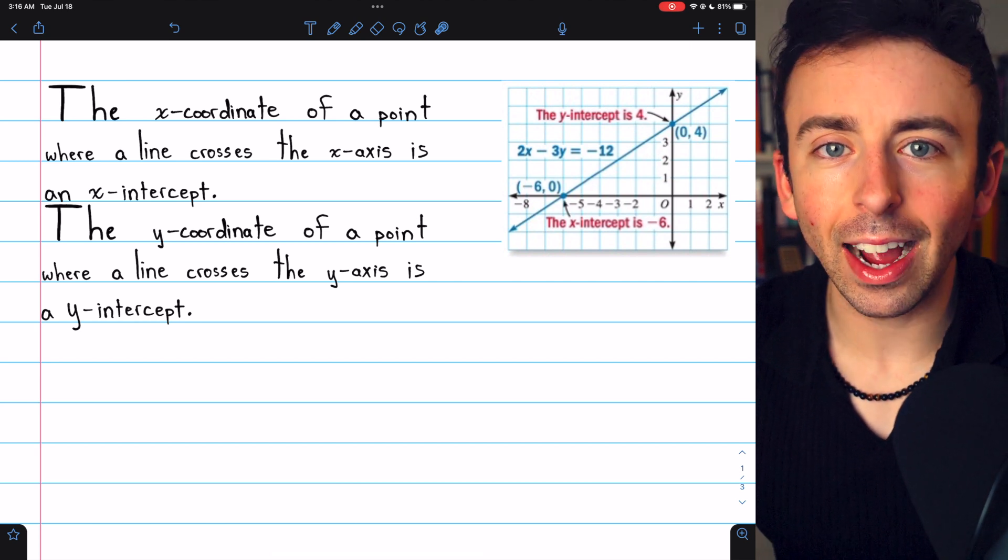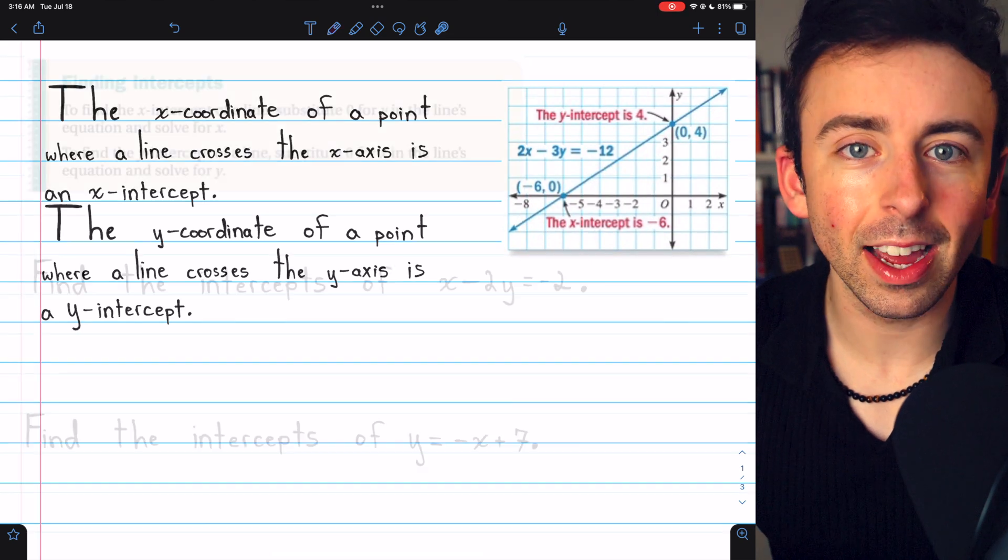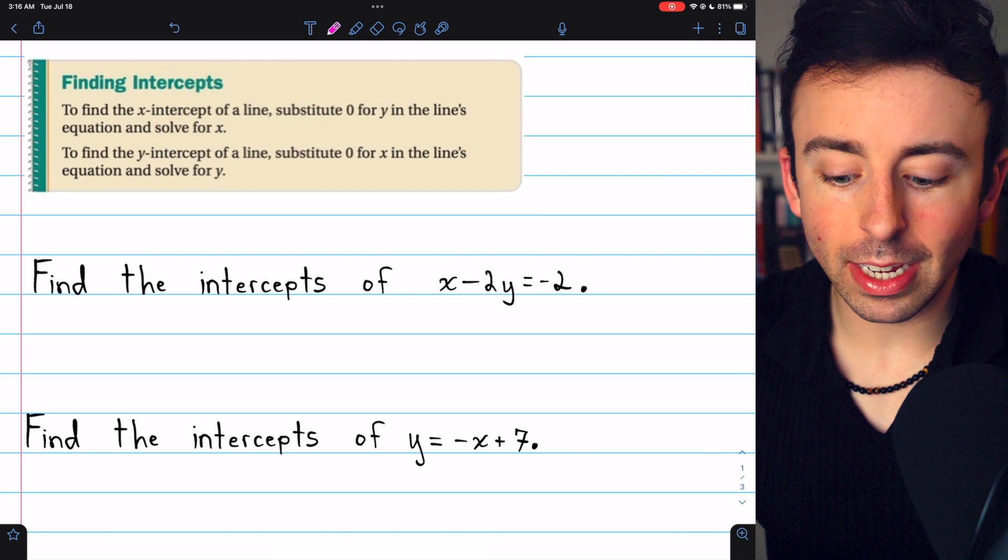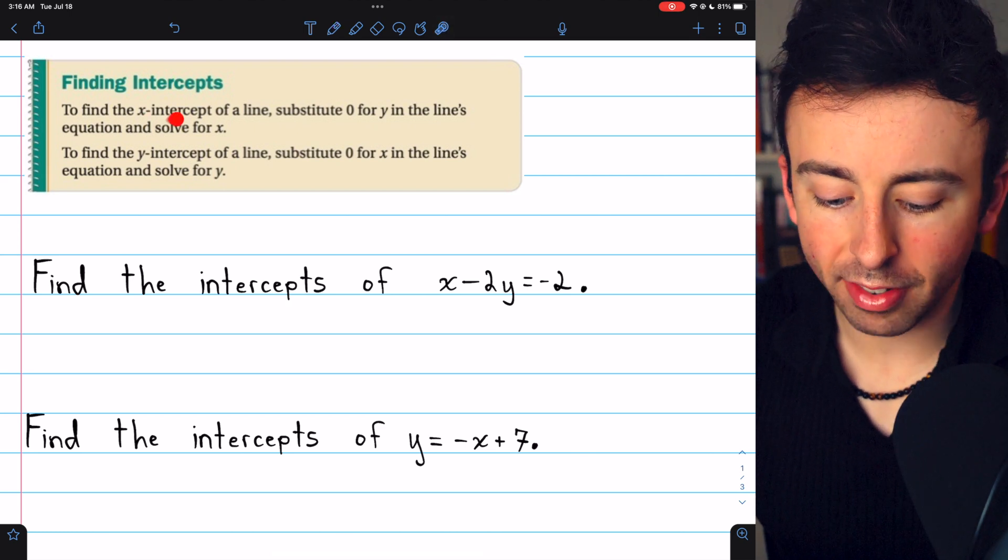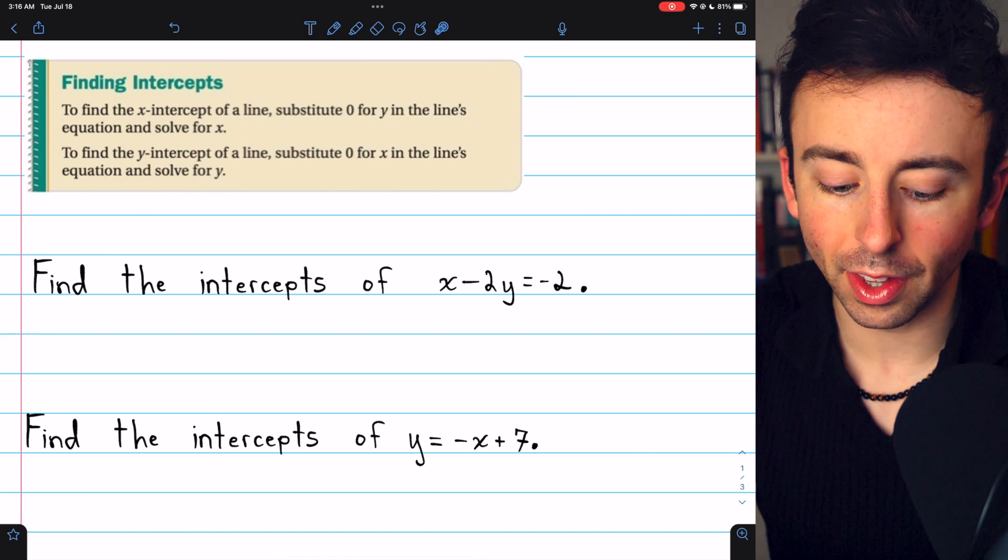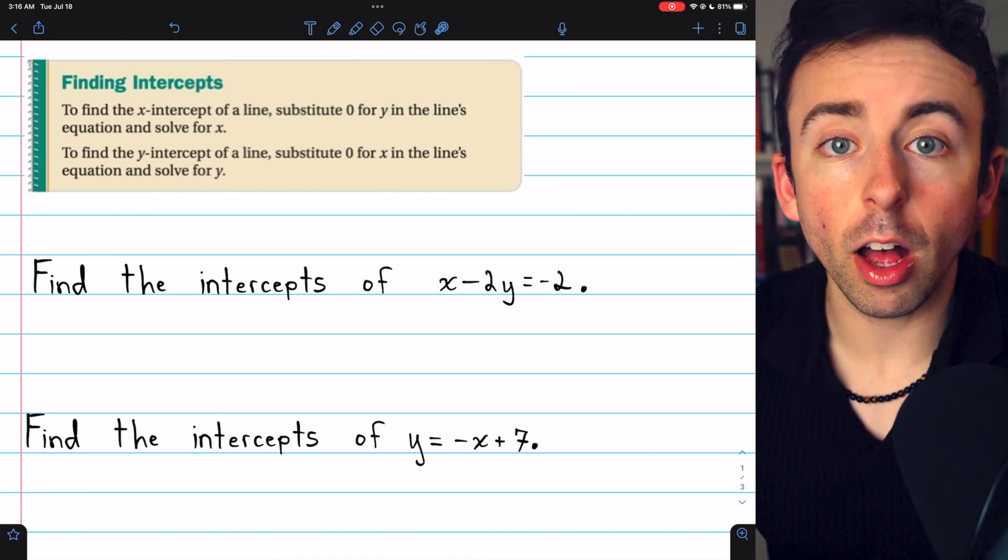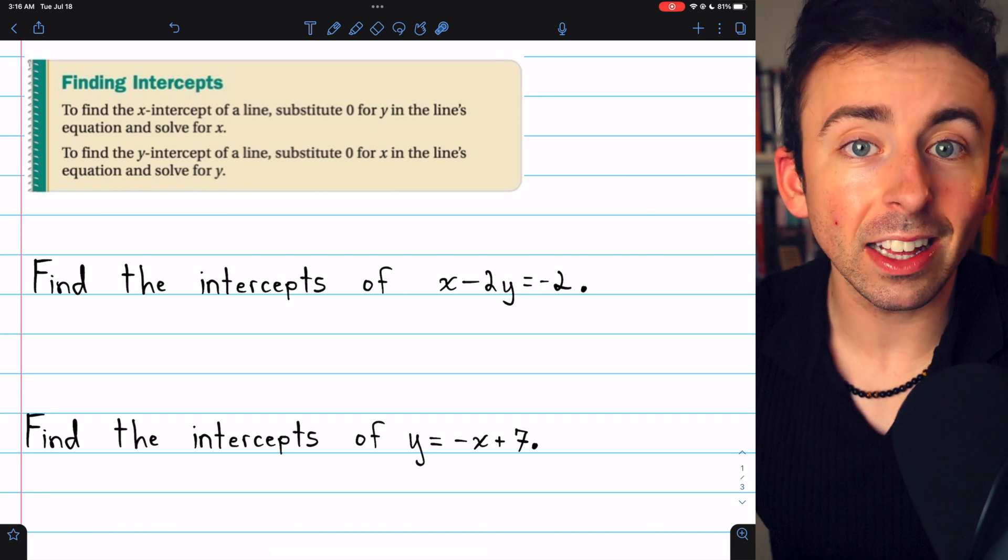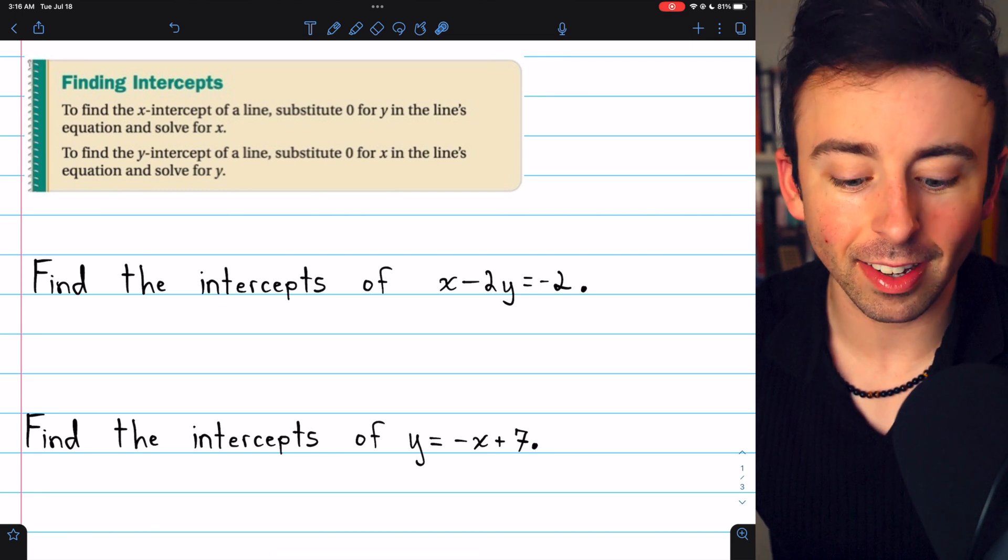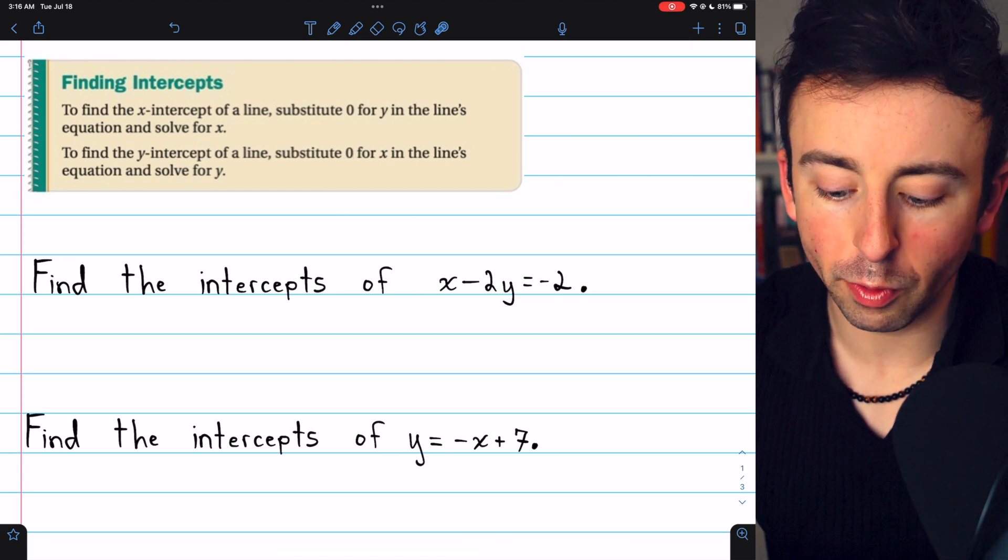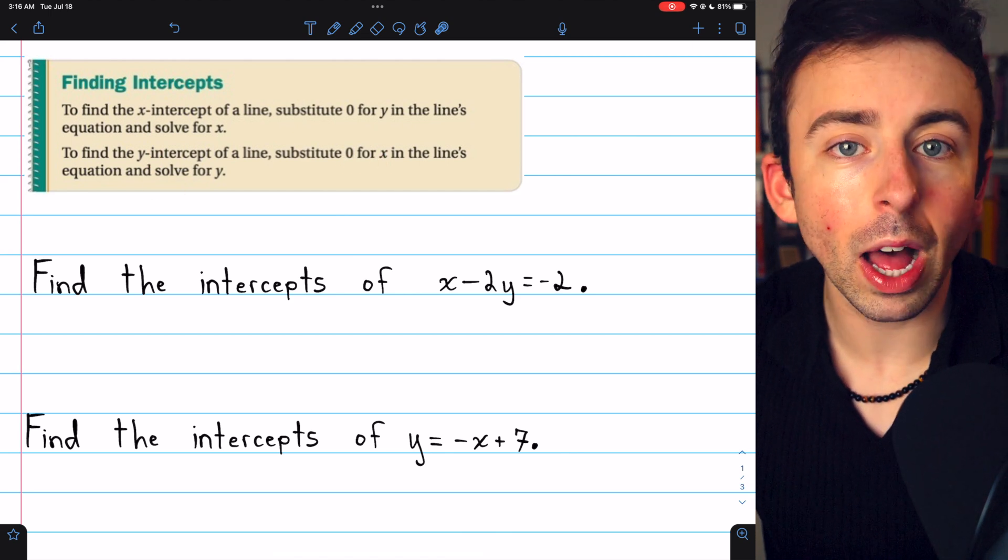Let's see how to find the x and y-intercept of a line. Given the equation of a line, finding the x and y-intercepts is really easy. To find the x-intercept, we just need to substitute 0 for y in the line's equation and then solve for x, because wherever y is 0, that's where the line hits the x-axis. Similarly, for the y-intercept, just substitute 0 in for x and then solve for y.